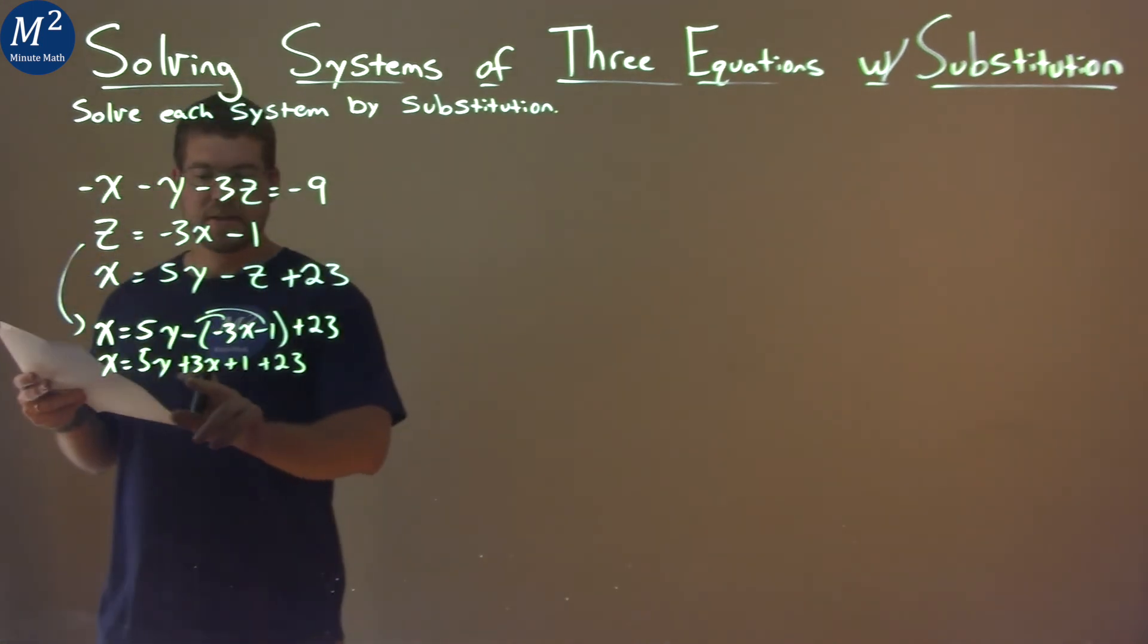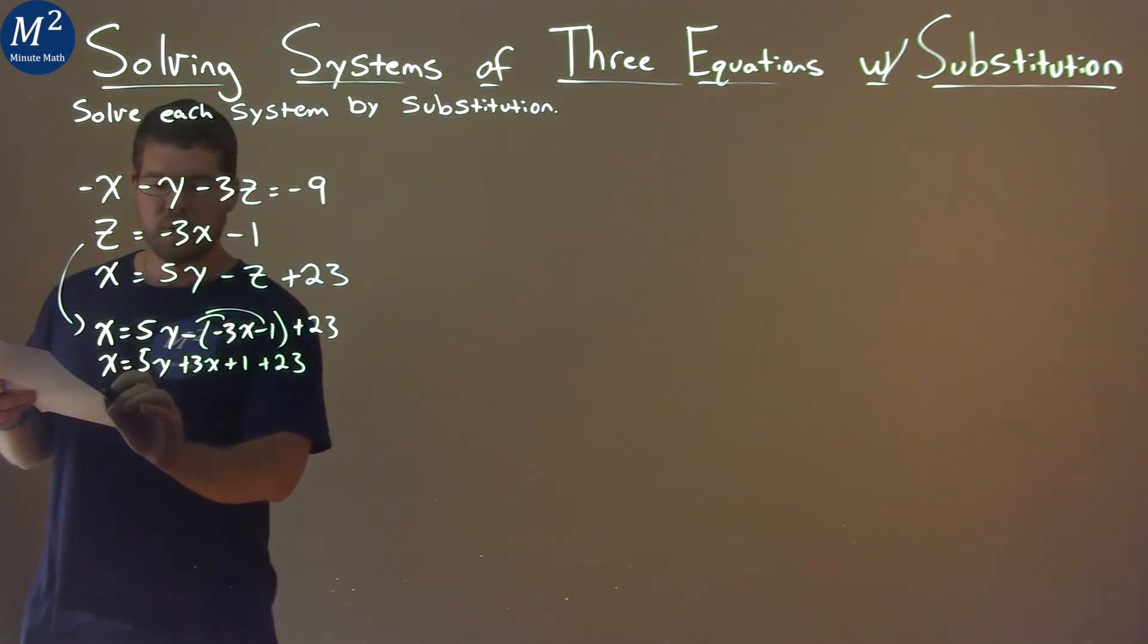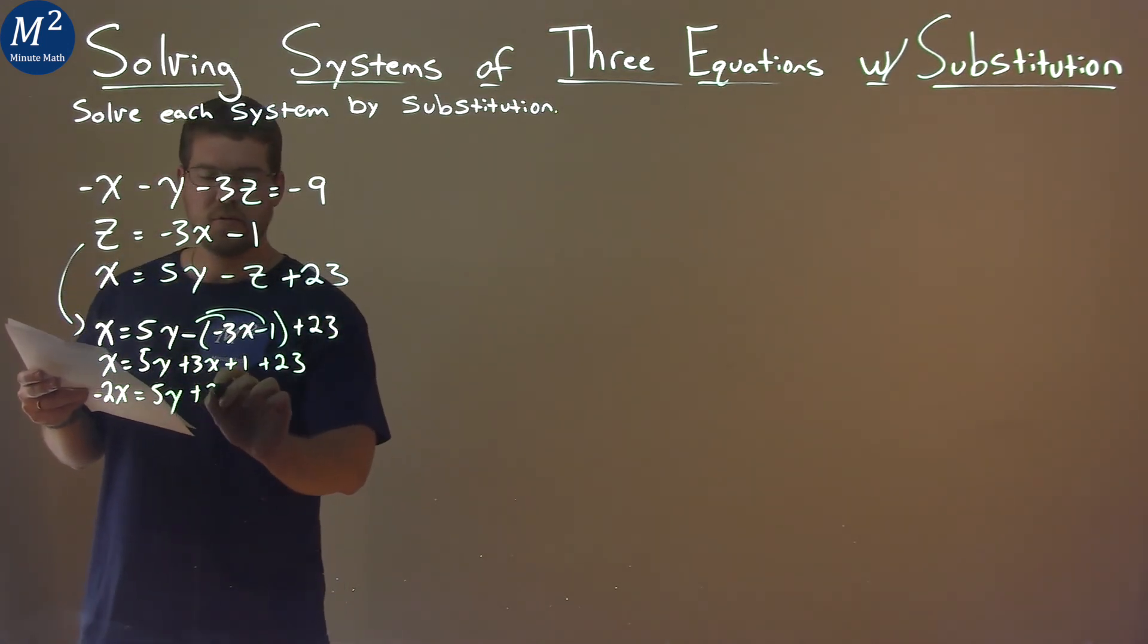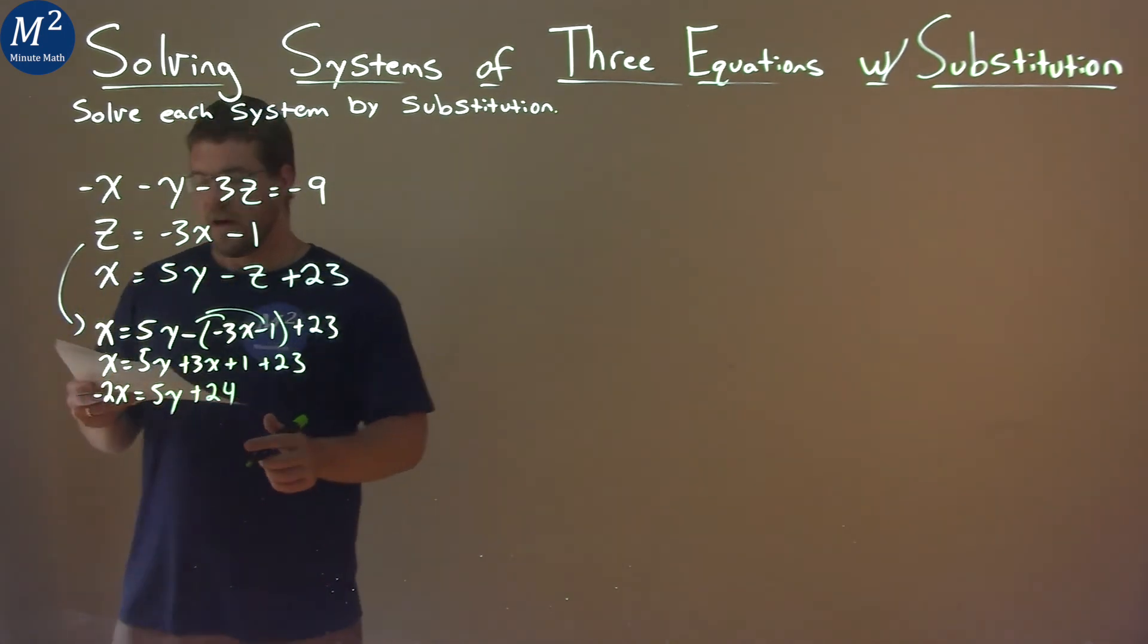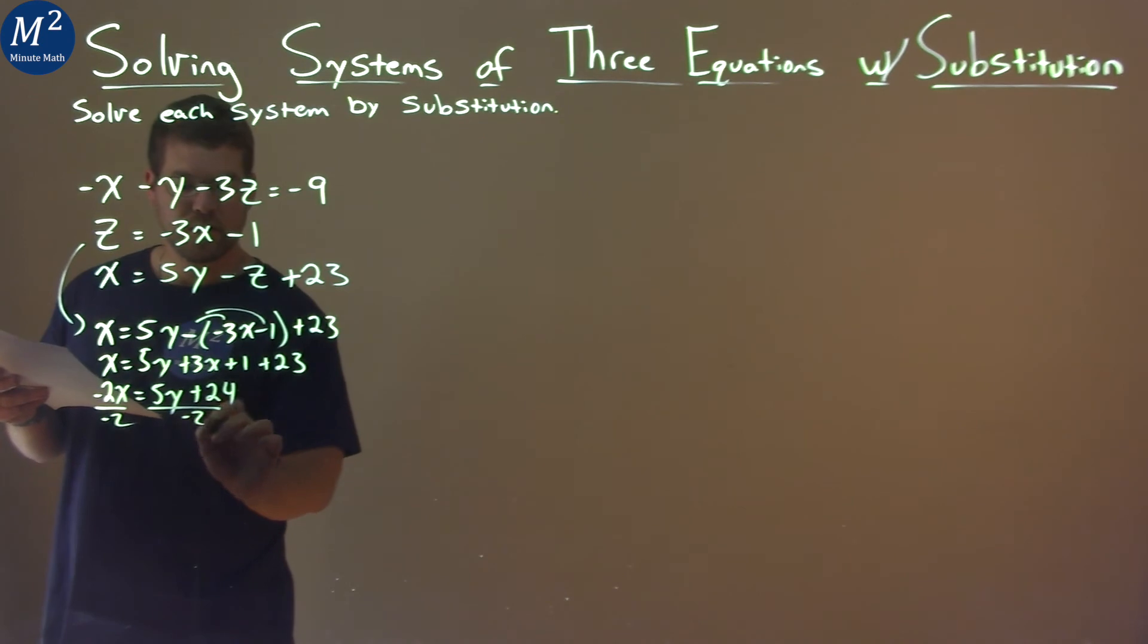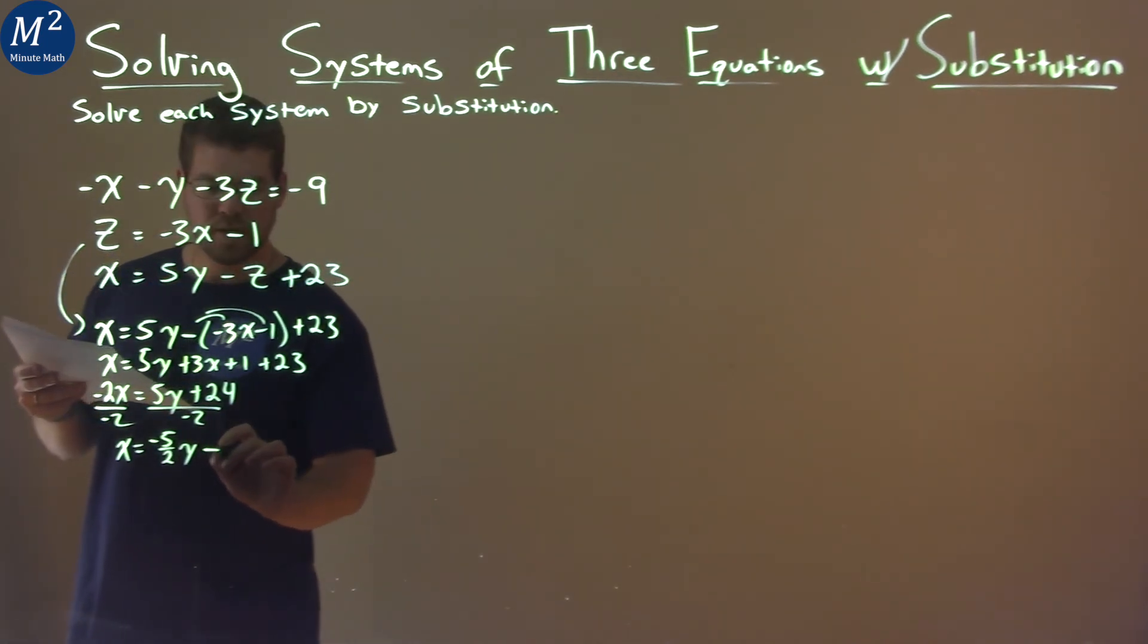And now I'm going to subtract the 3x to both sides, and that gives me negative 2x equals 5y. Then 1 plus 23 is 24. If I divide both sides by negative 2, now I have x completely by itself, and in fraction form we have negative 5 halves y, and then 24 divided by negative 2 is negative 12.